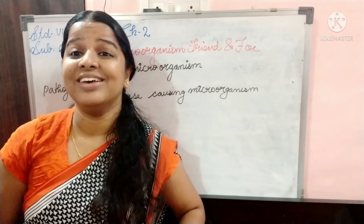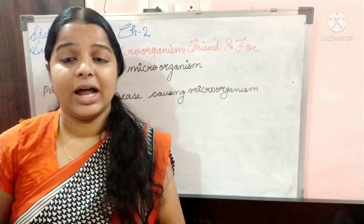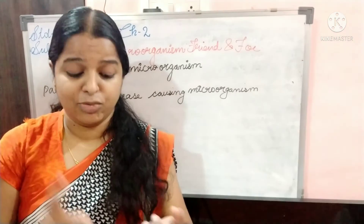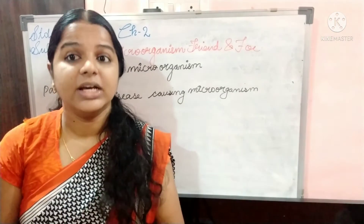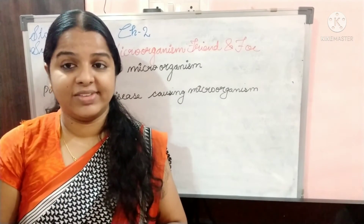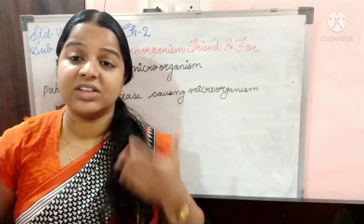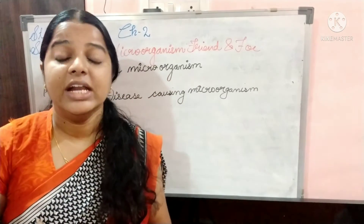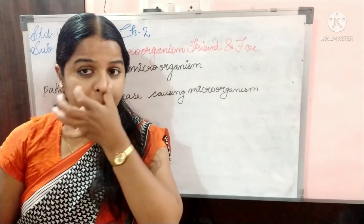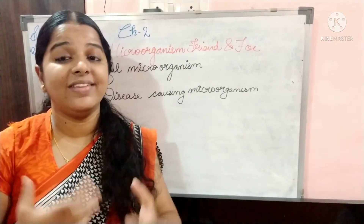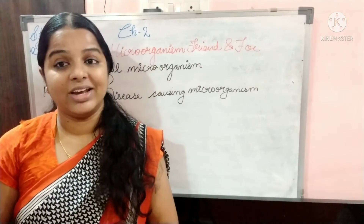Now we are going to move on to the topic of food poisoning. Microorganisms present in food make the food spoil. When we eat that food, the smell will be very bad and the taste will be bad — these are symptoms of food poisoning. When we eat spoiled food, it causes diarrhea, stomach pain, dysentery, and fever.